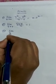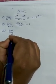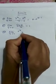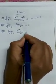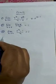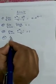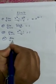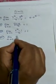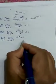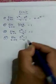Third sutra: limit x tends to 0, e to the power x minus 1, divided by x, equals 1.